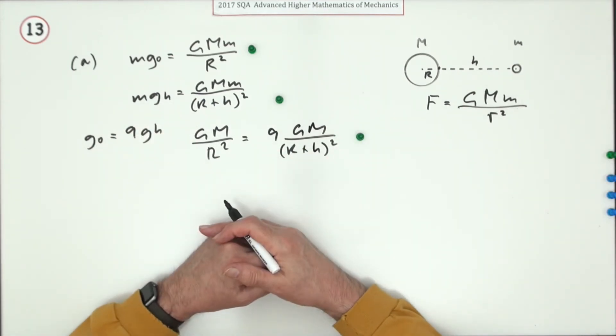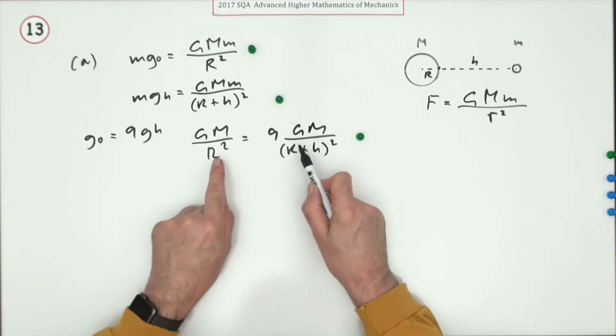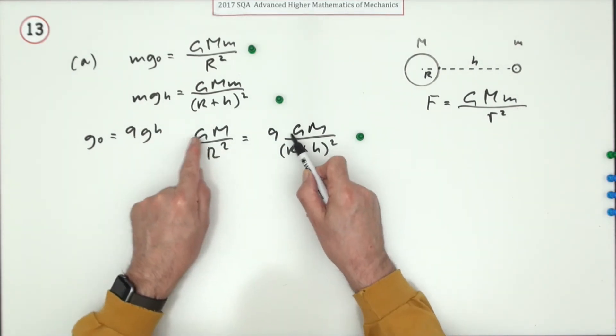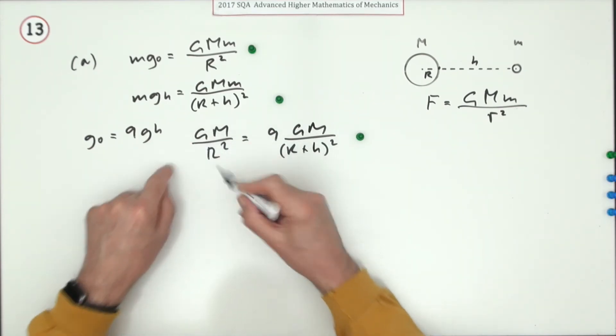I'm going to say that's the third mark because I think it's just as simple as that. And the last mark's now just for solving that. Now that they're equated to each other, the GM's will cancel out, then take that across to multiply that side, take that across to multiply that side.